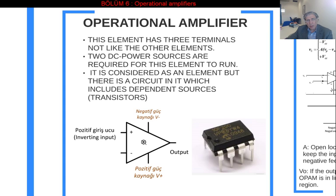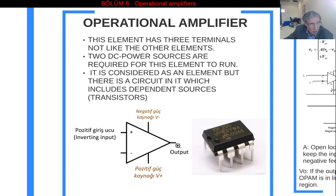Three terminals we said: two inputs and one output. All the elements that we have seen already have only two terminals, and there were no names for the terminals — no input terminal or output terminal. But this has three terminals: two of them are inputs and one is the output terminal. You cannot interchange these input terminals, so it is different from the elements we have seen already.